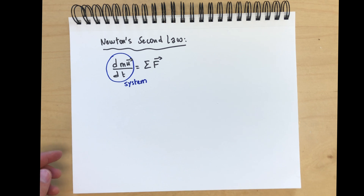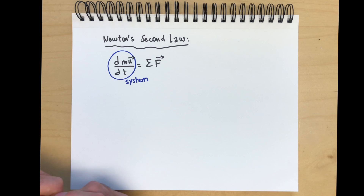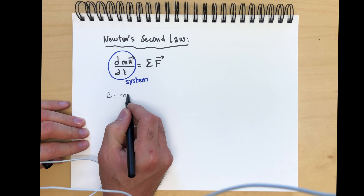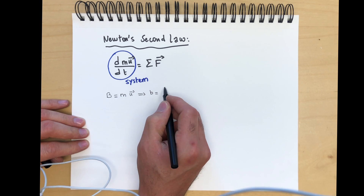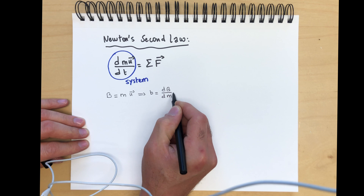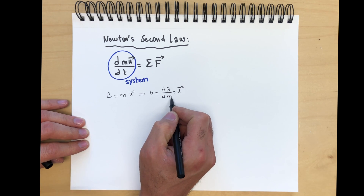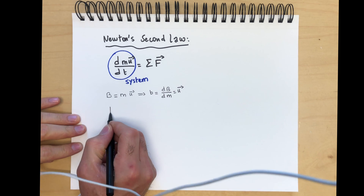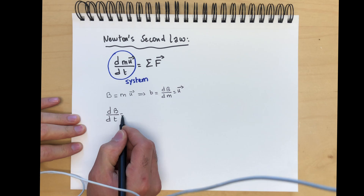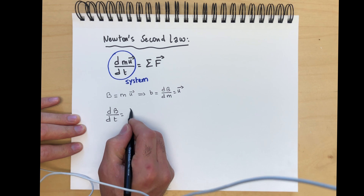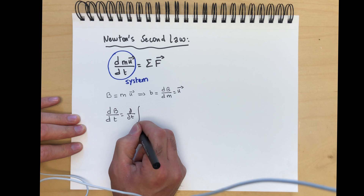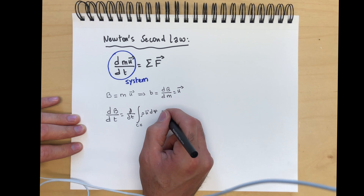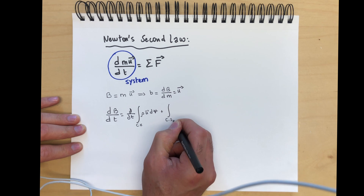In what follows, we will only be dealing with fixed control volumes. Our extensive property is momentum, that's Mu, so that our intensive property dB/dM is equal to U — that's momentum per unit mass. The Reynolds transport theorem tells us that dB/dt equals the partial derivative with respect to time of the integral over the control volume of rho*U dV — rho times the intensive property — plus the fluxes across the surface of a control volume.